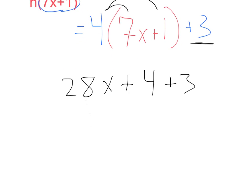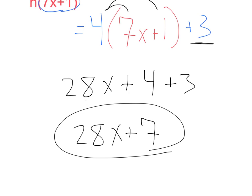Simplifying that again, we'll add our like terms. 28x is going to stay the same. We have 4 + 3. That's going to be plus 7, and we've got our answer. Thank you.